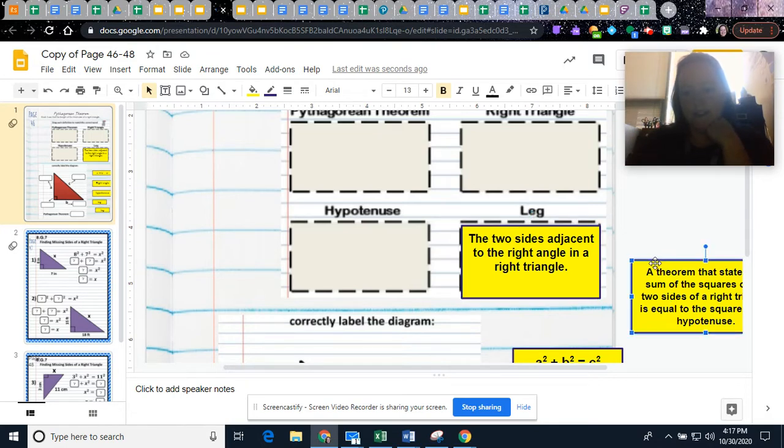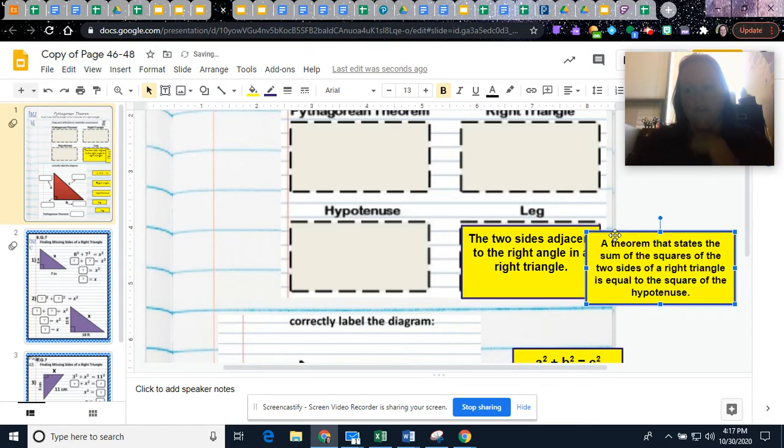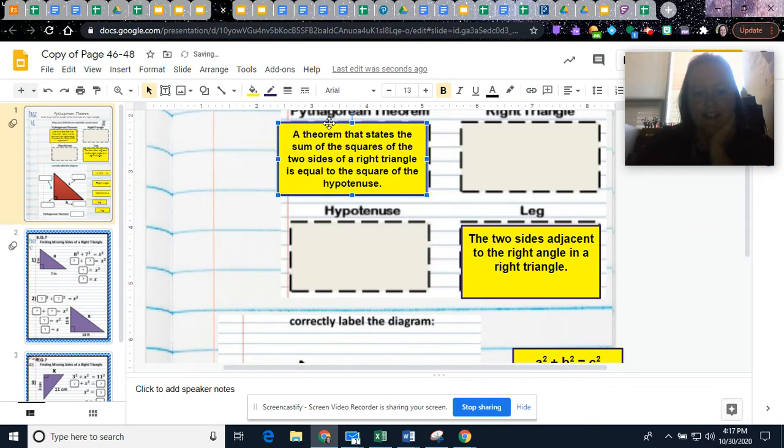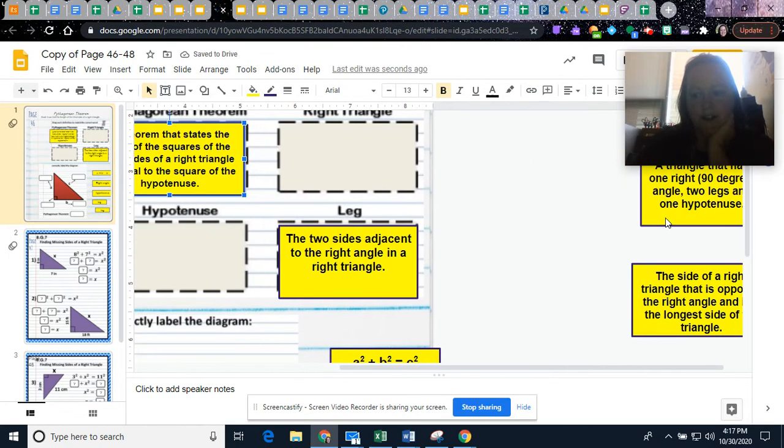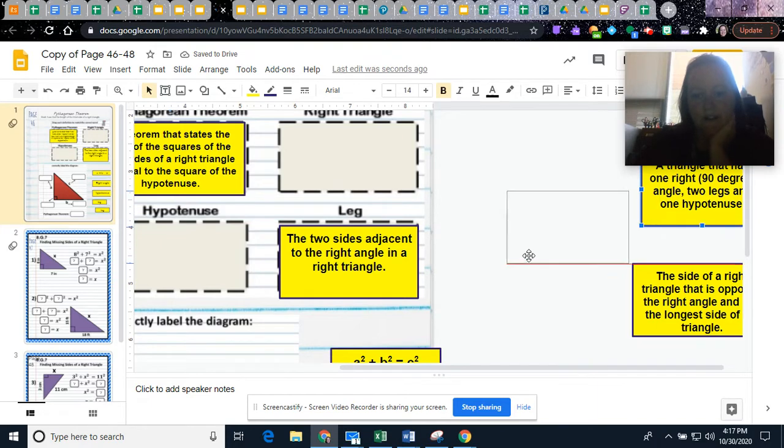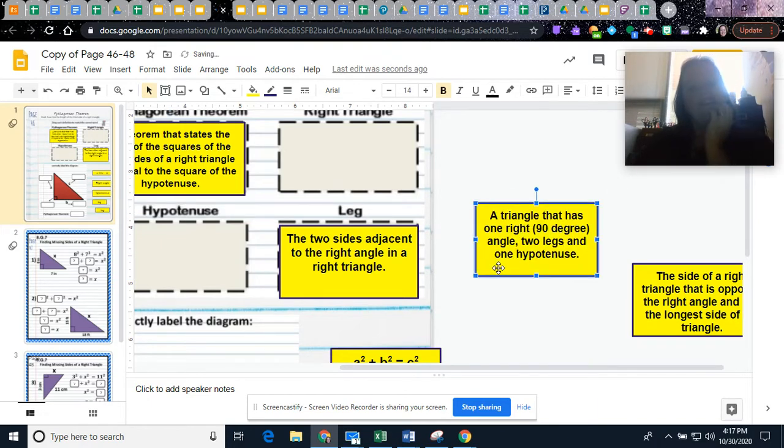A theorem that states that the sum of the squares of two sides of a right triangle is equal to the square of the hypotenuse. That is the Pythagorean Theorem. In math terms, that's saying A squared plus B squared equals C squared. A triangle that has one right 90 degree angle, two legs, and one hypotenuse is a right triangle.